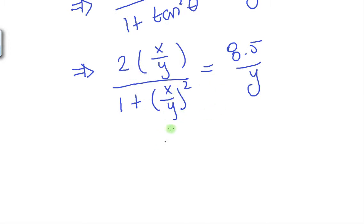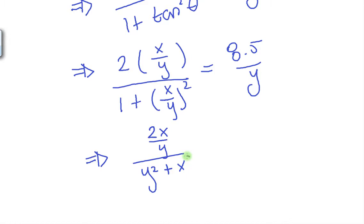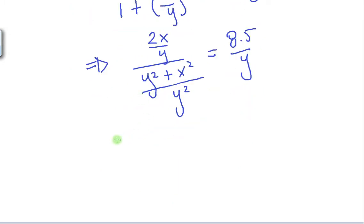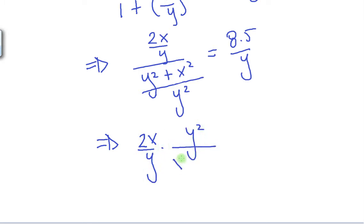So we have 2 times (X over Y) divided by 1 plus (X over Y) squared equals 8.5 over Y. Now let's simplify. On the top we have 2X over Y. On the bottom we find a common denominator of Y squared, giving Y squared plus X squared over Y squared. So this becomes (2X over Y) divided by (Y squared plus X squared over Y squared) equals 8.5 over Y. Dividing two fractions means we multiply by the reciprocal, and one of the Y's cancels. So we have 2X over Y times Y squared over (X squared plus Y squared) equals 8.5 over Y.